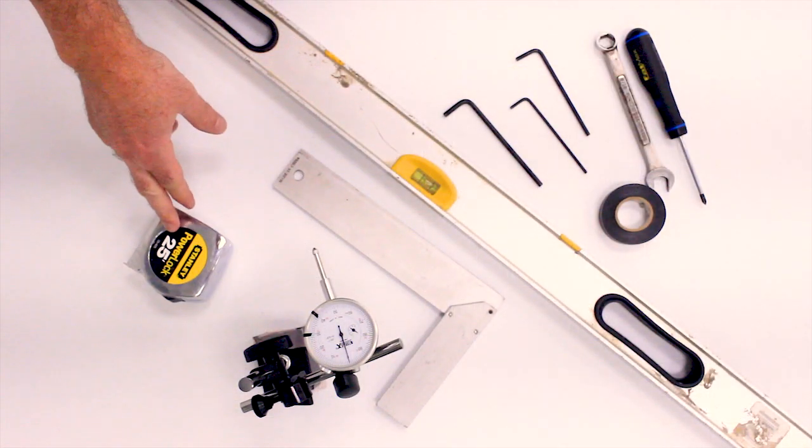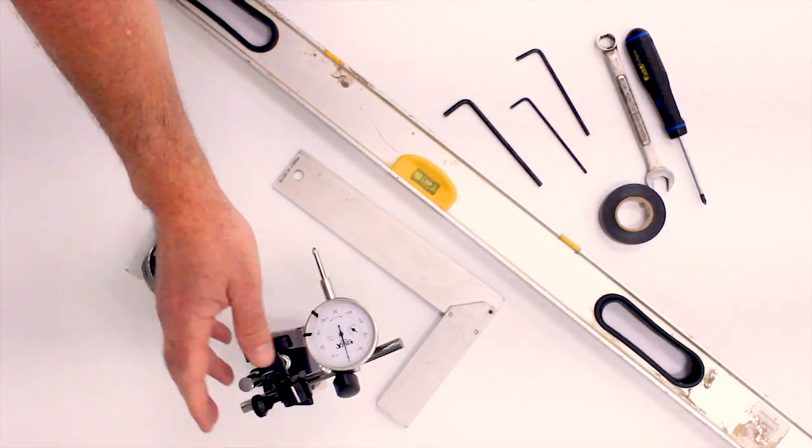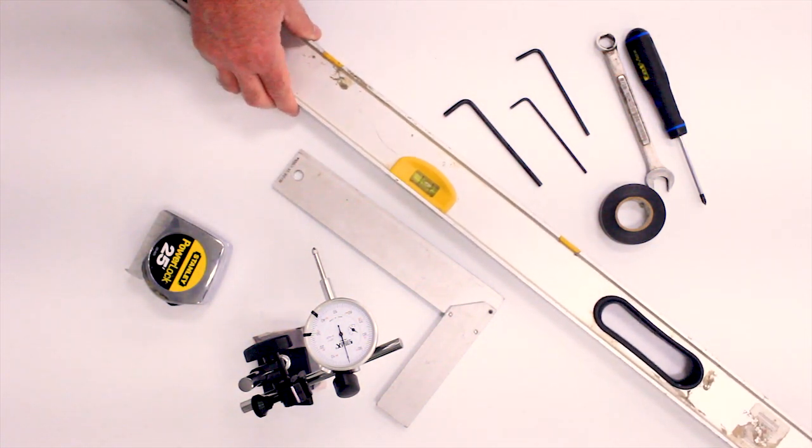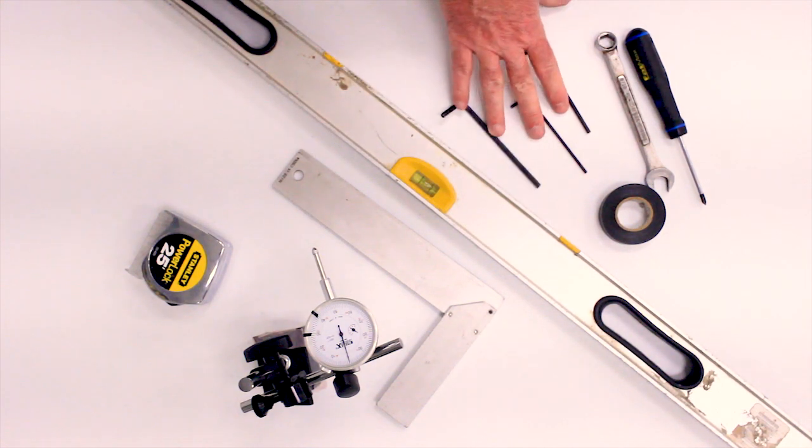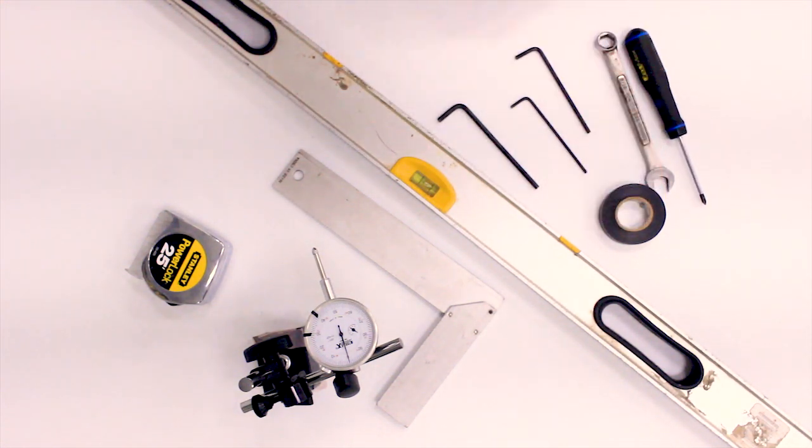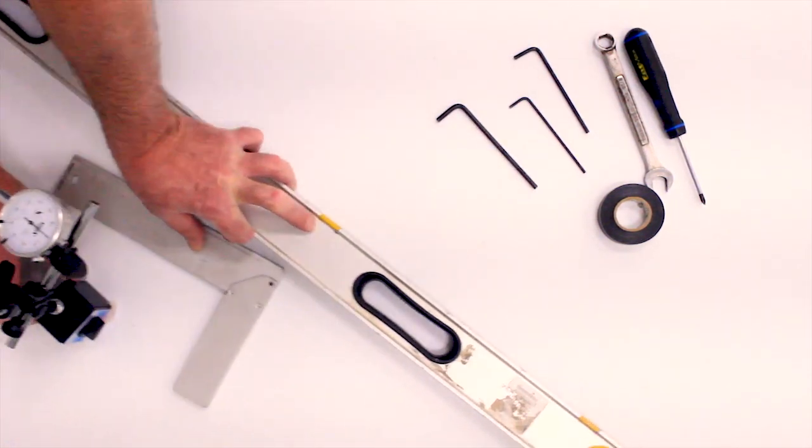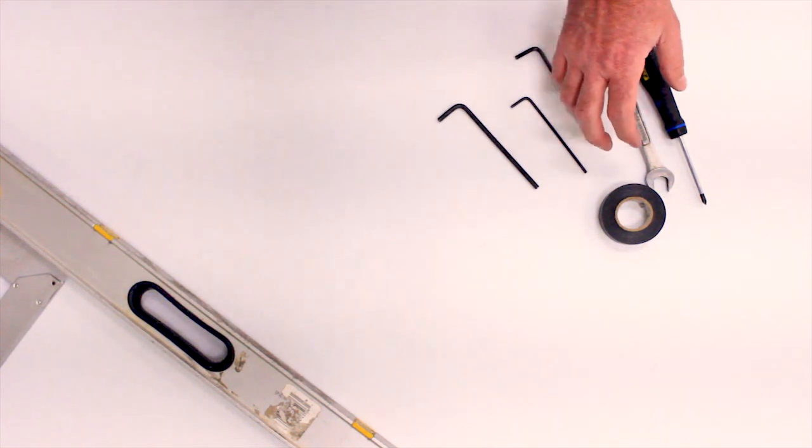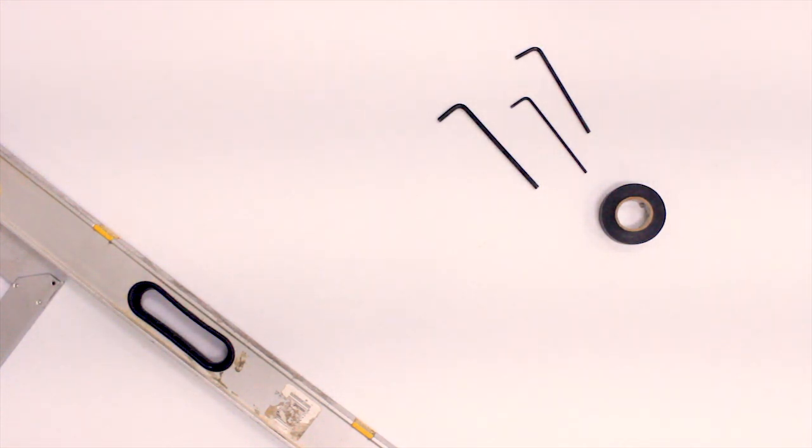You need a tape measure, a micrometer, a square, a good quality straight edge or level, some assorted wrenches, electrical tape. Actually, we don't need any of this. For this particular model, we don't even need a screwdriver and a wrench. OK, we're going to get started.